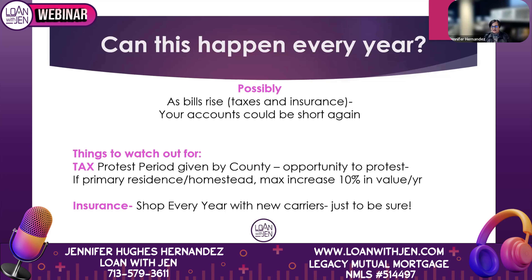The spring is a busy time as a homeowner every single year. Escrow analysis is done in February and March, then values come out so that you can protest in the summer, and then the bills come out all over again. It's a repeating cycle every single year.